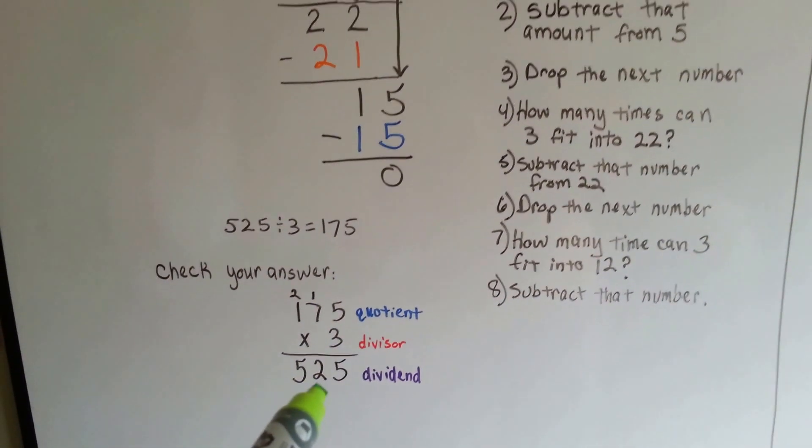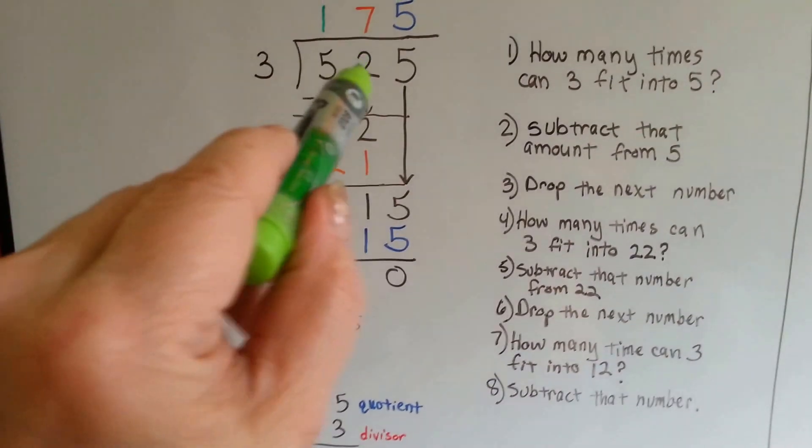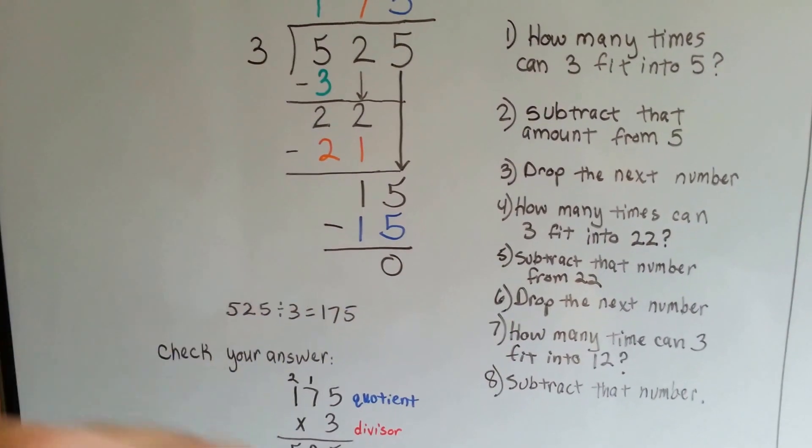And if that number, which is supposed to be your dividend, is the same as your dividend, then you know you did the whole thing correctly.